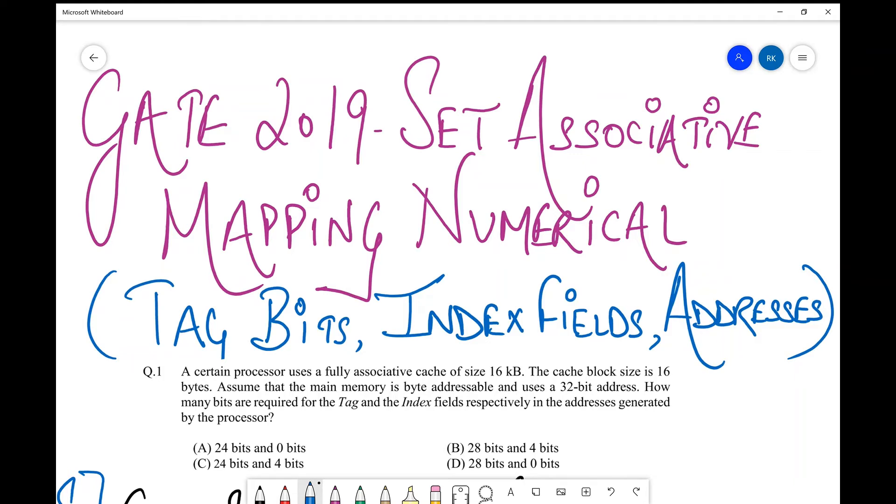Hello friends, welcome back to my channel. Today in this session we are going to discuss a GATE 2019 question from a very important concept, and that is set associative mapping. As you can see, in GATE question papers nowadays, from previous year trends, cache questions and database questions are predominant.